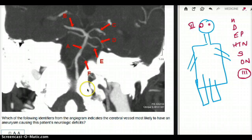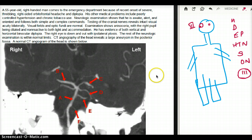Which of the following identifiers, so it's A, B, C, D, E, or F, from the angiogram indicates the cerebral vessel most likely to have an aneurysm causing this patient's neurological deficits? Now let's read the question one more time, okay?